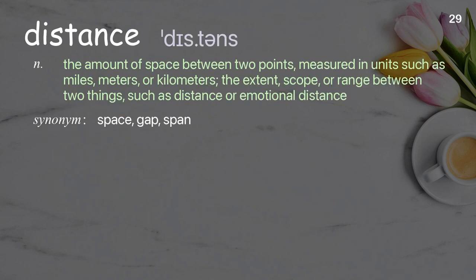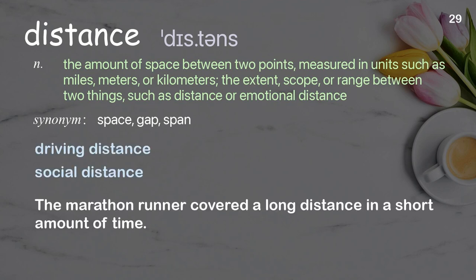Distance: The amount of space between two points, measured in units such as miles, meters, or kilometers; the extent, scope, or range between two things, such as physical or emotional distance. Examples: Driving distance. Social distance. The marathon runner covered a long distance in a short amount of time.